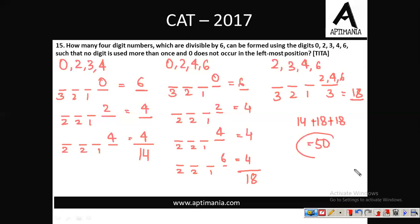Adding all cases: 14 + 18 + 18 = 50. So there are a total of 50 different numbers possible. The correct answer for question number 15 is 50.